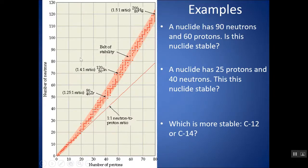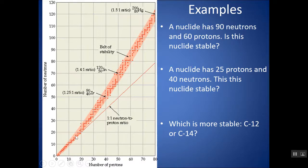This graph is called the belt of stability. The number of protons is on the x-axis and the number of neutrons is on the y-axis. You can plot a nucleus to see if it is stable or unstable. Notice that below atomic number 20, a 1-to-1 ratio of neutrons to protons is most stable. But beyond that, a 1-to-1 ratio falls outside the belt of stability — you need more and more neutrons to make the nucleus stable.